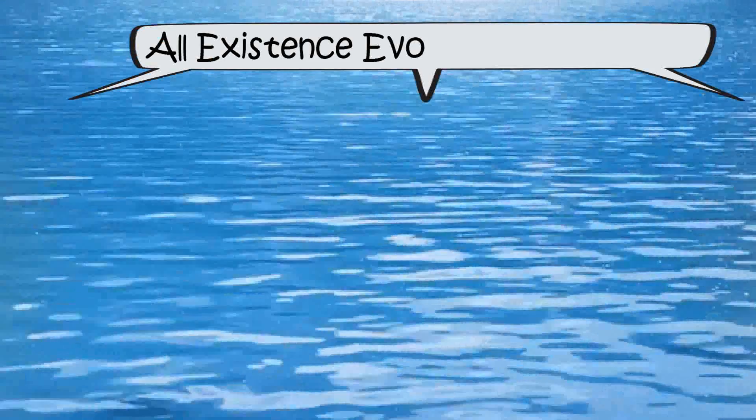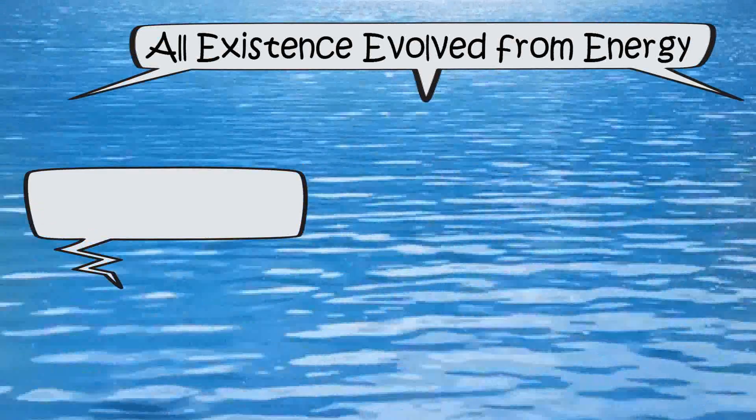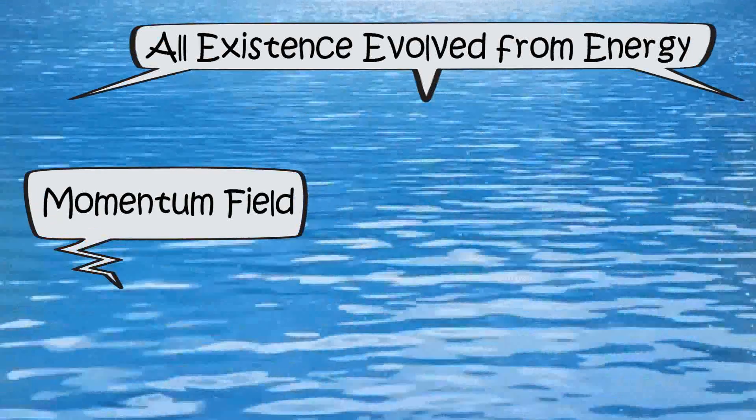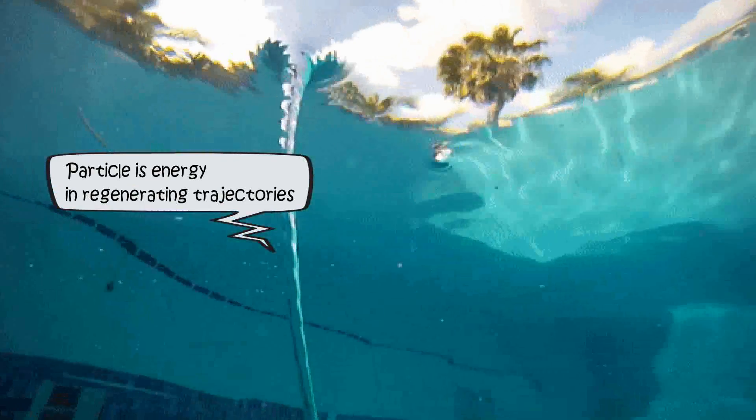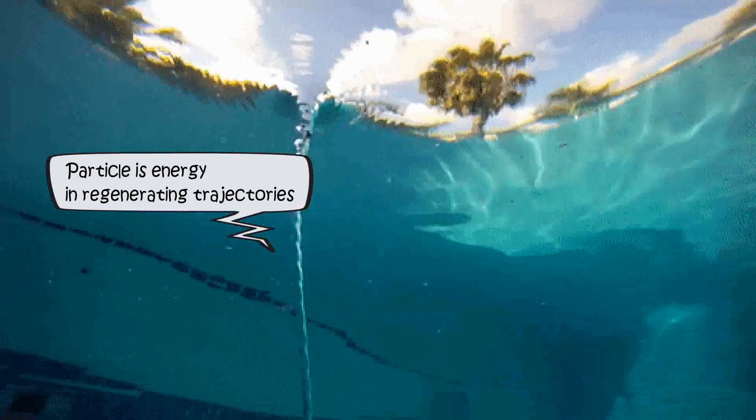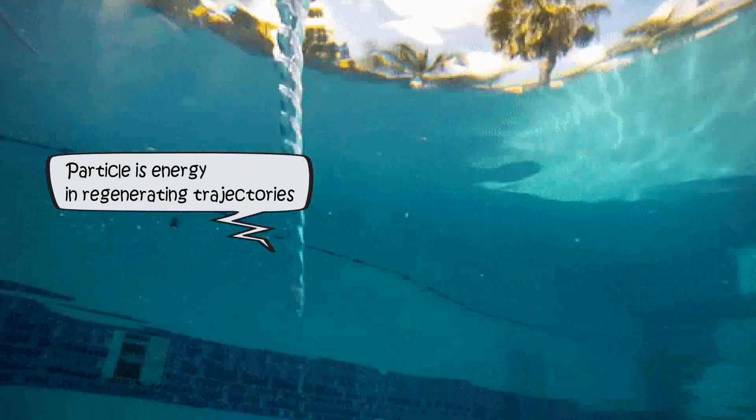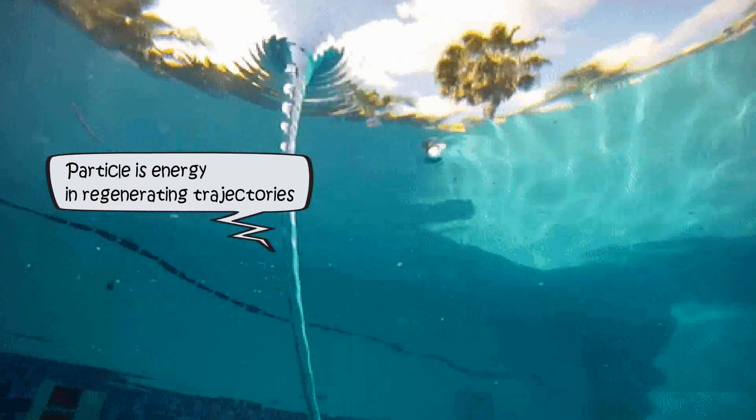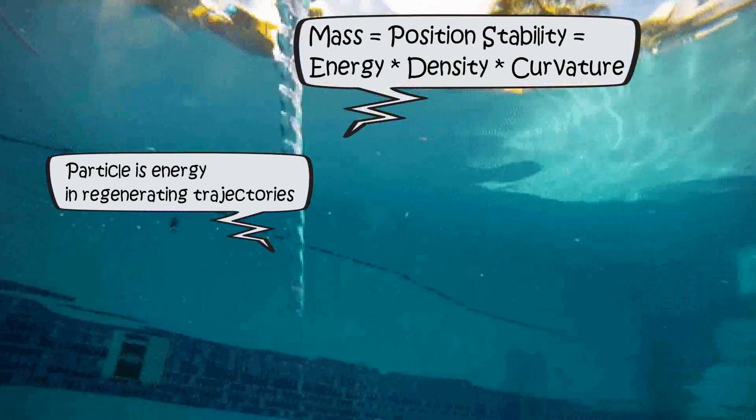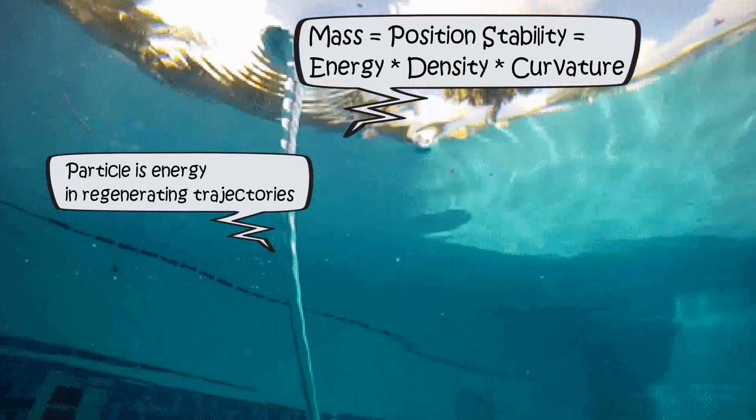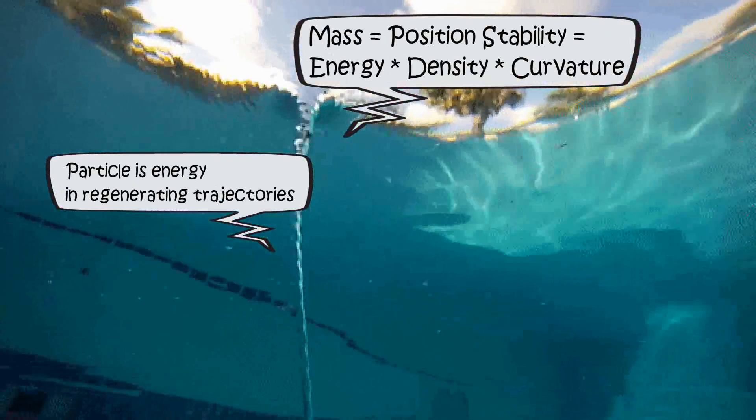Mass versus gravity. Everything is made of momentum, constantly traveling and interacting at universal rate. This is the only logical definition of fundamental energy. Energy can never stop. If it appears to be stationary from a distance, it is just conserved by performing repetitive action. Mass is simply energy's position stability against its surrounding. So mass can only be achieved by momentum traveling in regenerating routes, which can be measured by mass equals energy times density times curvature.